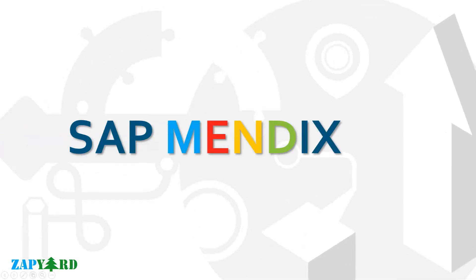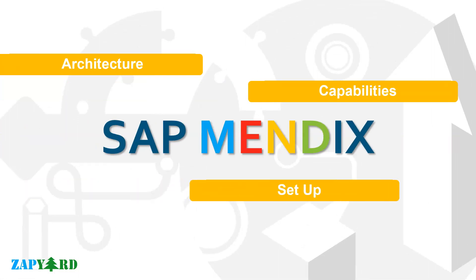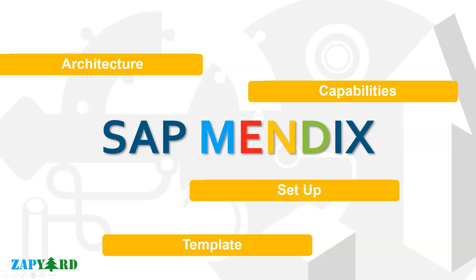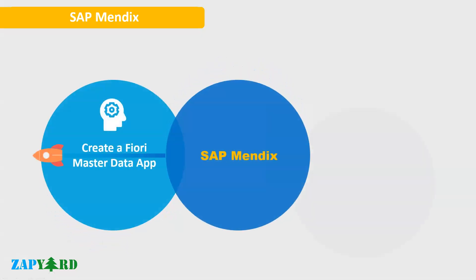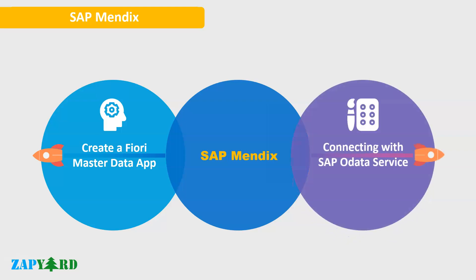App Giver is one tool which SAP has been promoting extensively. You must have heard about App Giver in TechEd last year and also in various newsletters. But there is another tool called SAP Mandix which can also be used for rapid app development. The next sessions in this course will primarily cover SAP Mandix. We will learn about the architecture, capabilities, setup and templates of SAP Mandix. We will create a Fiori master data app using SAP Mandix tool, and also connect to SAP backend using SAP OData services and perform CRUD operations.